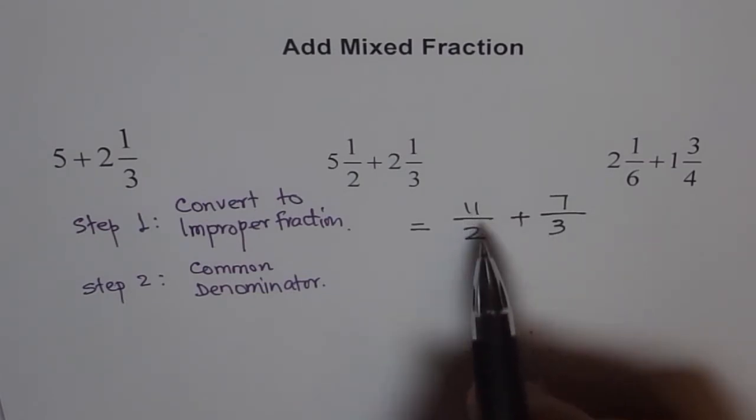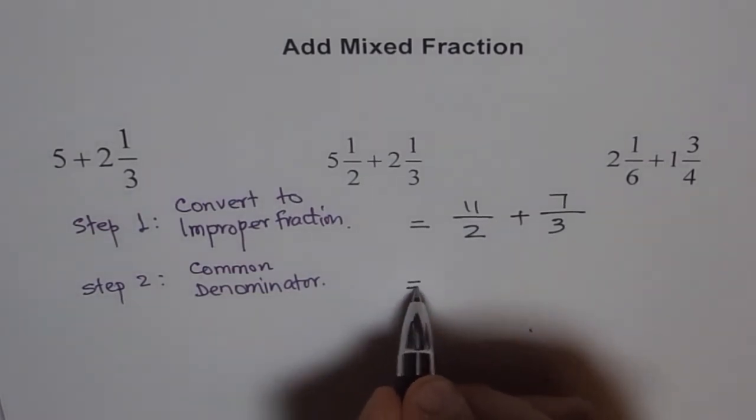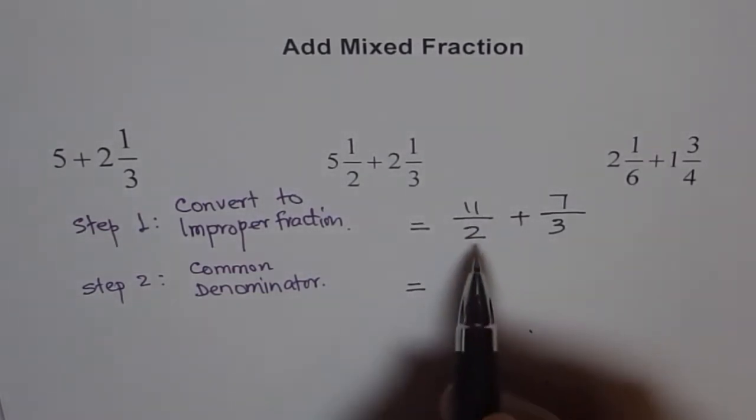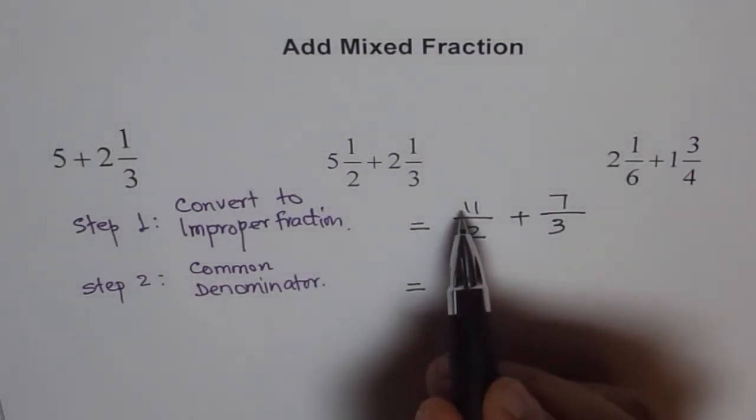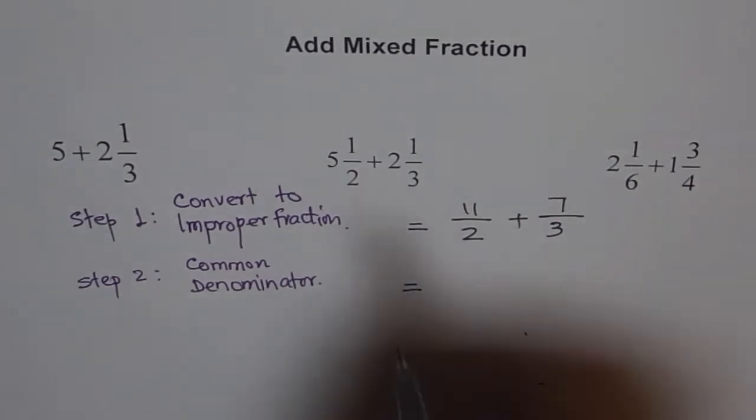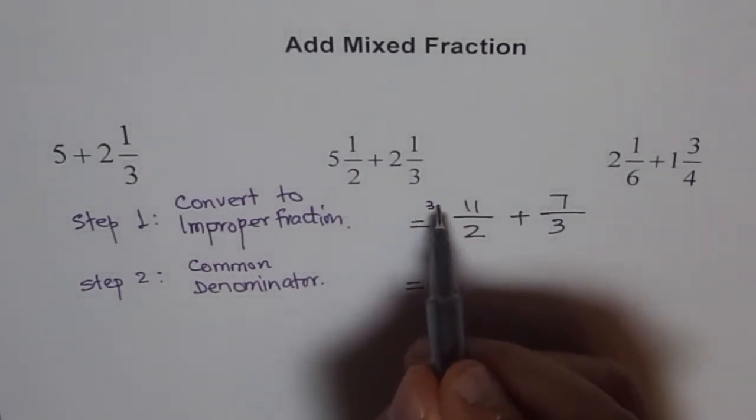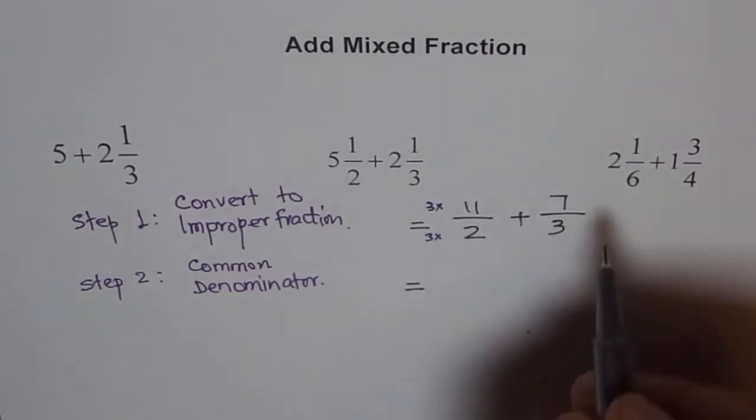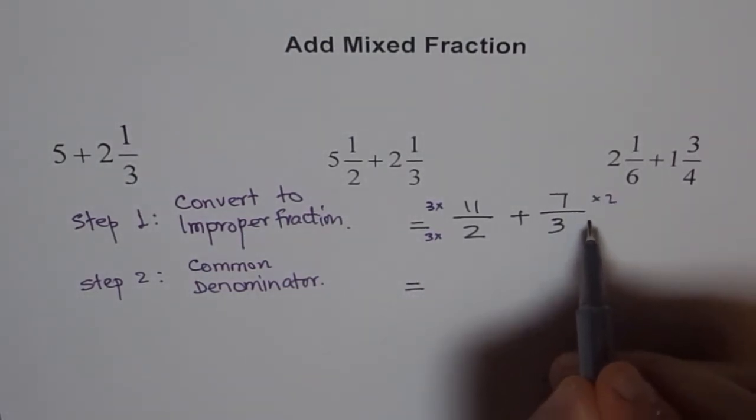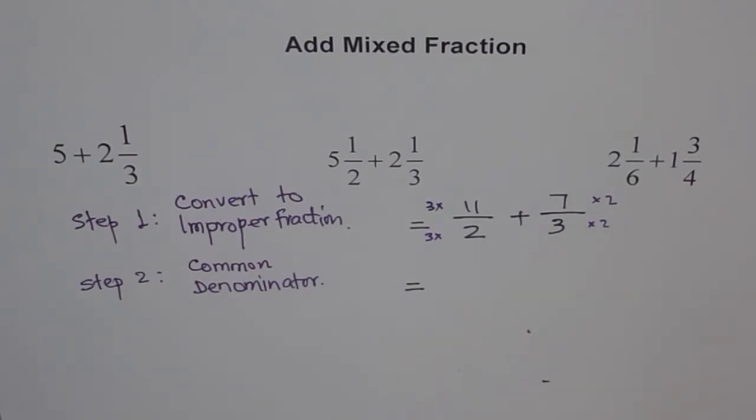So, we can make both as 6. So, how can you make both of them as 6 with 6 denominator? You can multiply this by 3. So, that means, what I will do? I will multiply this both by 3 and make it 6. How about this? We will multiply both of them by 2, because 2 times 3 is 6.